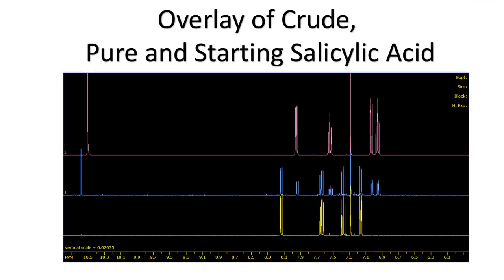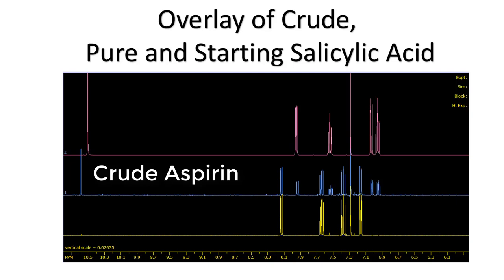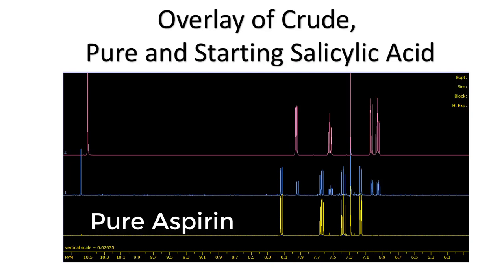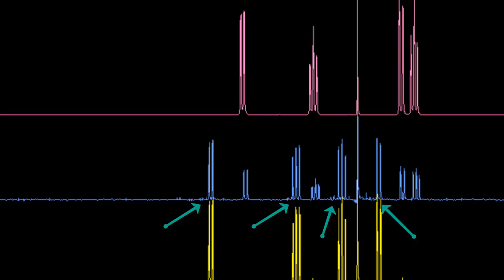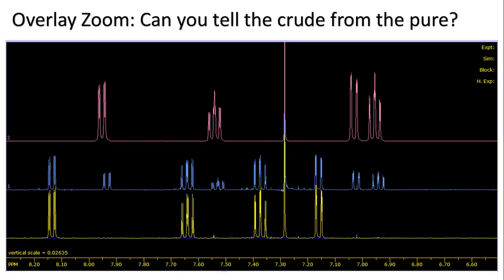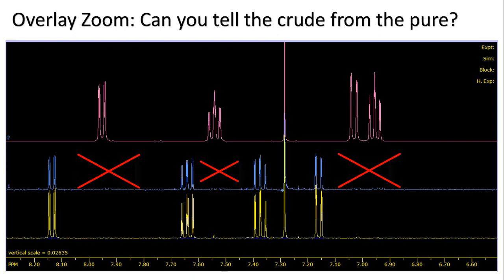Here's the overlay: the top spectrum is salicylic acid, the blue middle spectrum is the crude, and the lower spectrum is the pure aspirin. You can see the difference clearly. If you look at the crude and salicylic acid, you can see that these peaks match up. If you look at the crude and the pure, you can see where the pure aspirin aromatic peaks show up. By process of elimination, you can subtract out the salicylic acid from the crude and compare it to the pure to see what you have.